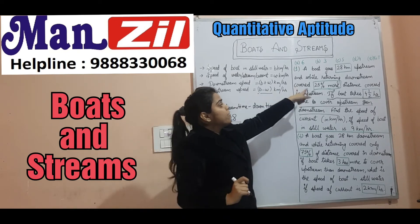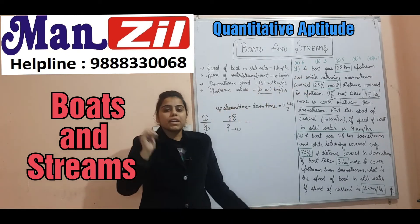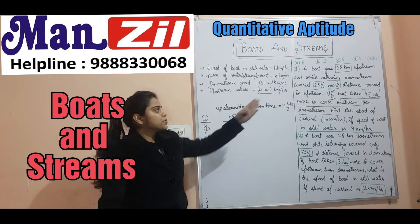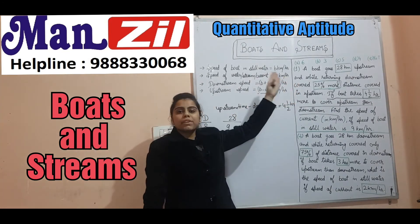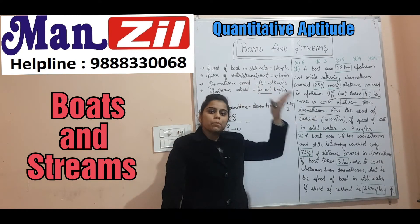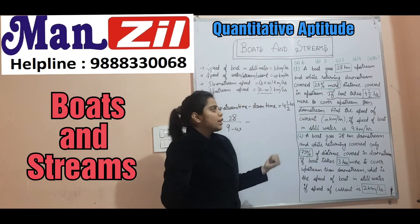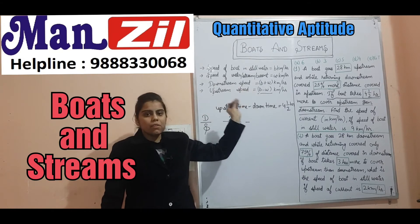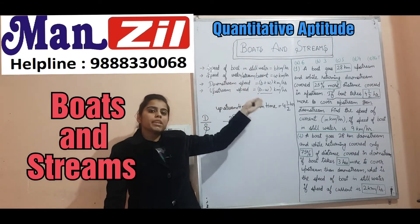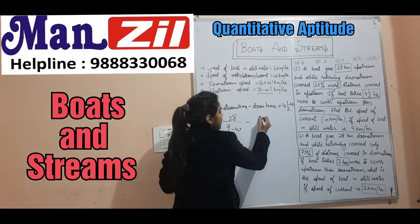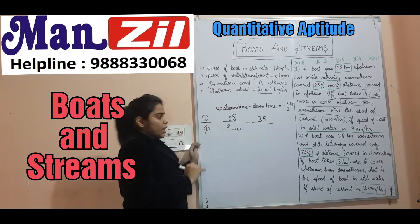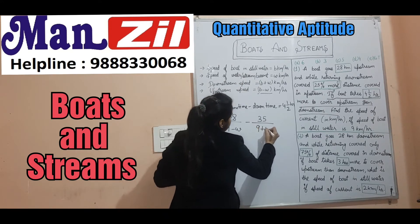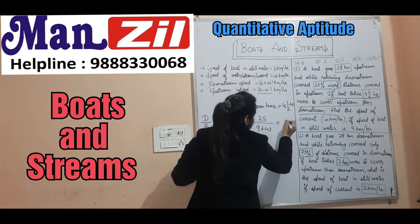Downstream distance is 25% more than 28 km. Some students first calculate 25% separately and then add — but try to do it quickly. 25% is 1/4th. 1/4th of 28 km is 7 km. 28 plus 7 is 35 km. So downstream distance is 35 km. Downstream speed is B plus W, which is 9 plus W. And 4 and 1/2 hours equals 9/2. So our equation is: 28/(9 − W) minus 35/(9 + W) = 9/2.